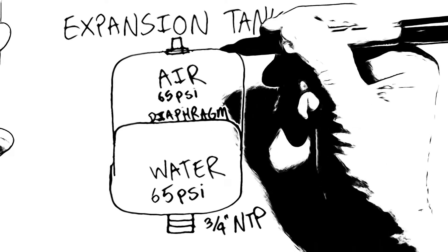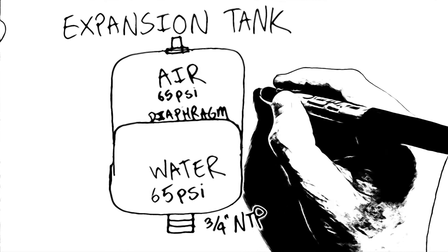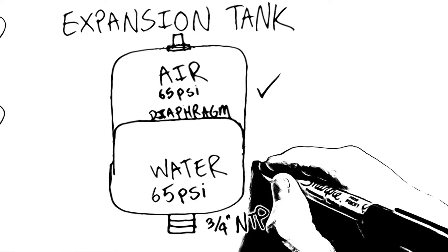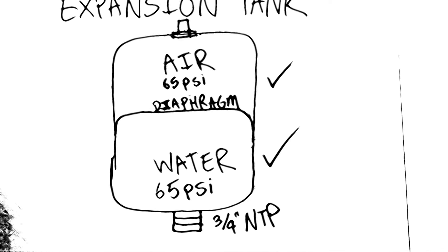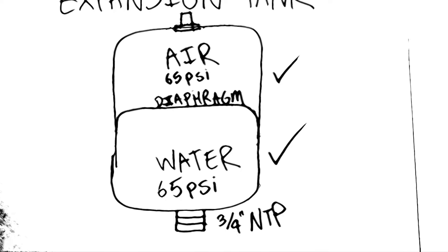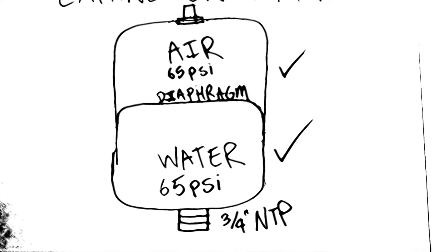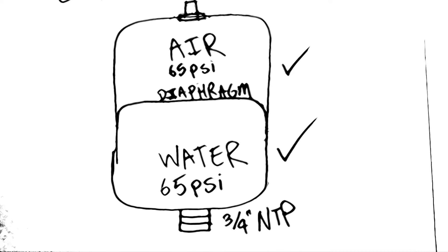So, if I know my system is at 65 psi, I should fill up the air chamber to 65 psi. This way, when the water pushes in and begins to expand, it will have somewhere to go as it compresses the air chamber.